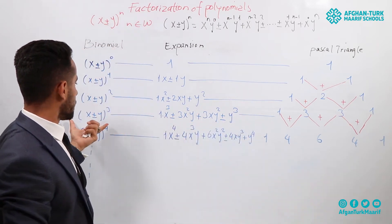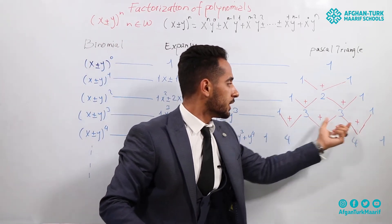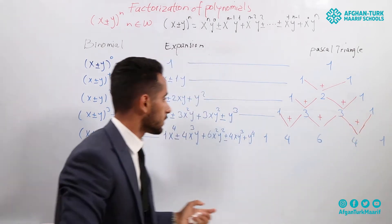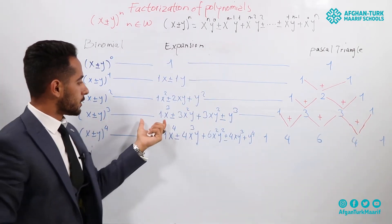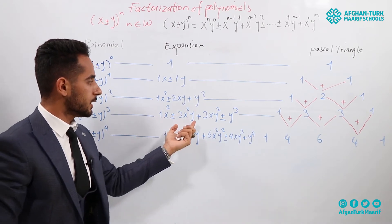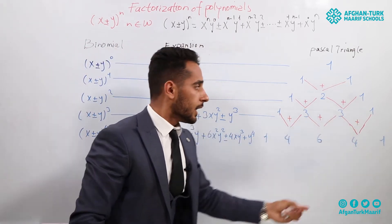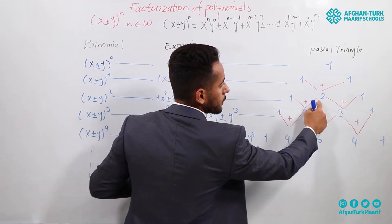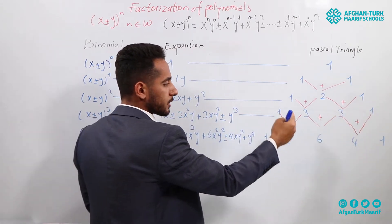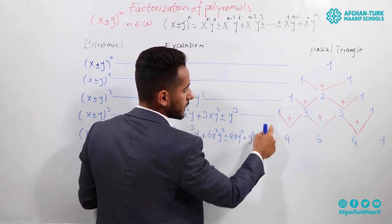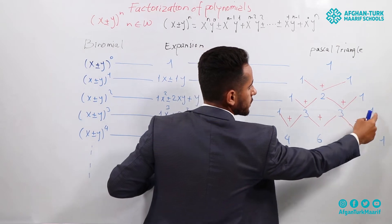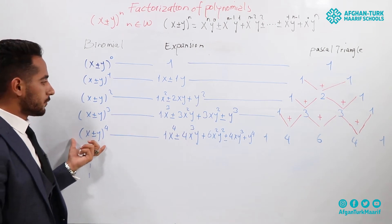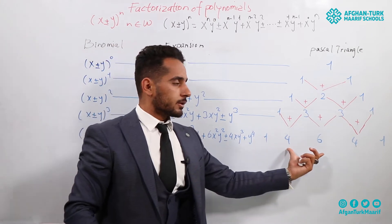The coefficient of the binomial to the power of 3 is 1, 3, 3, 1. The first term's coefficient is 1, second term's is 3, third is also 3, and the fourth is 1. We use the rule: 1 plus 2 equals 3, 2 plus 1 equals 3, and 1 itself. Continuing further: 1 plus 3 equals 4, 3 plus 3 equals 6, 3 plus 1 equals 4, and 1 itself. These are the coefficients for x plus or minus y to the power of 4, found from the Pascal triangle.